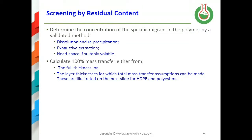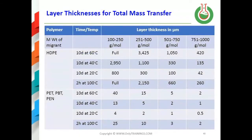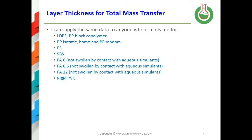You then calculate 100% mass transfer from the form thickness or layer thickness. These are illustrated on a table for high-density polyethylene and polyesters, showing various molecular weight ranges for your specific migrant and the layer thicknesses used for calculation of 100% mass transfer in each column. You can clearly see the difference in diffusion properties between a polyolefin and a polyester. The same data can be supplied for a range of other polymers on request.